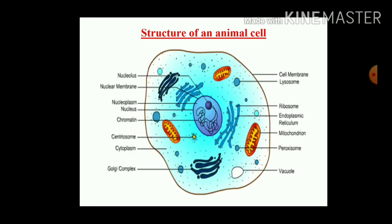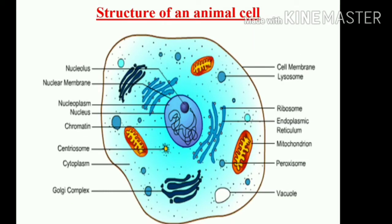Plasma membrane is the outermost covering of the animal cell. Let's see the structure of an animal cell in detail. You are able to see vacuoles, the mitochondria, endoplasmic reticulum, ribosomes — rough endoplasmic reticulum and smooth endoplasmic reticulum. The nucleus is separated by the nuclear membrane, and in the nucleus there is a nucleolus. You can also see the lysosomes, cell membrane, and cytoplasm.